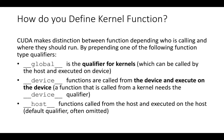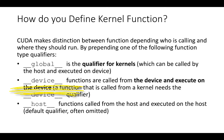We will now learn how to indicate that a function needs to be run on a GPU. CUDA makes a distinction between functions depending on whether the CPU or the GPU is calling them, and whether the function will run on the GPU or the CPU. CUDA makes this distinction using special function type qualifiers. The one we will use the most is __global__, which is the qualifier for kernels. If we prepend __device__, then functions are called from the device and execute on the device. If you have a function that is called from a kernel, it needs to have the __device__ qualifier in its declaration.